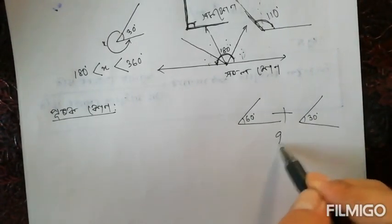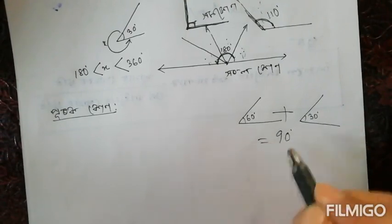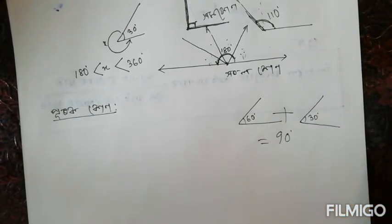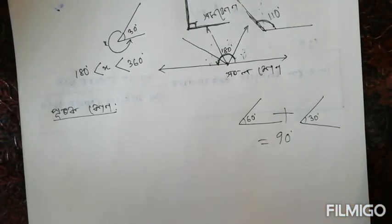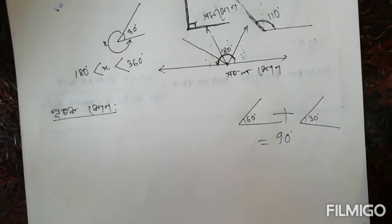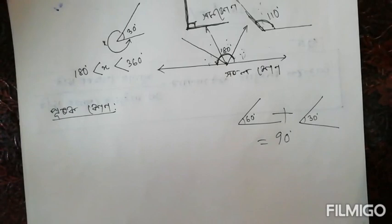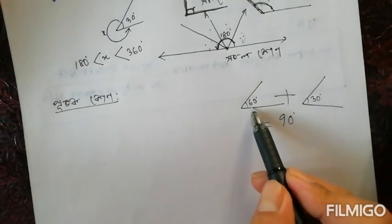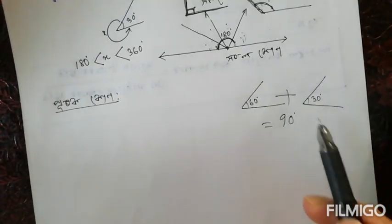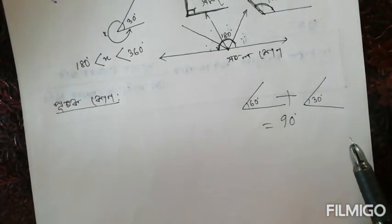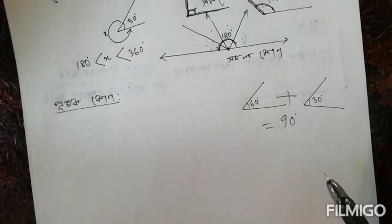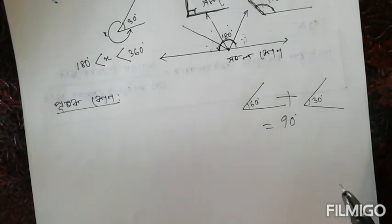90 degrees are nearby 80 degrees, 30 degrees, 60 degrees, 10 degrees at 90.